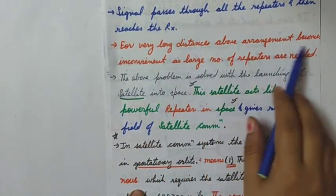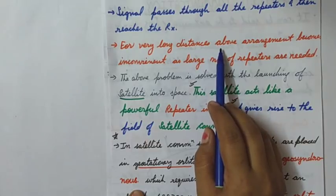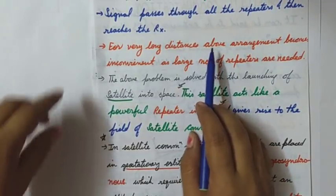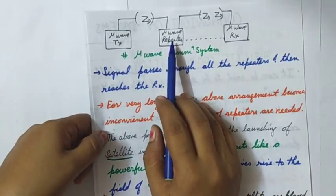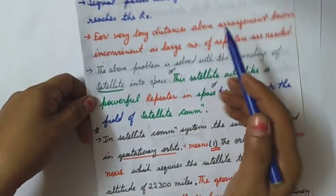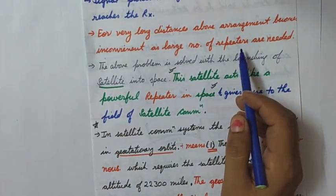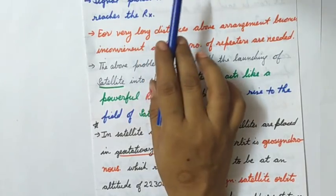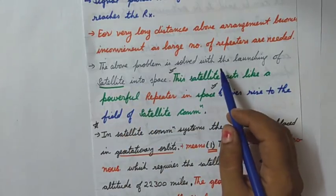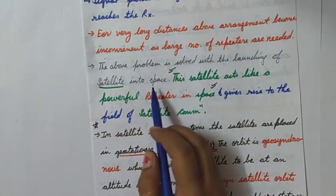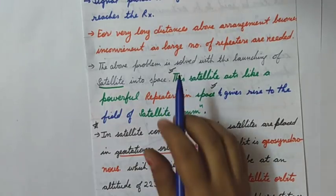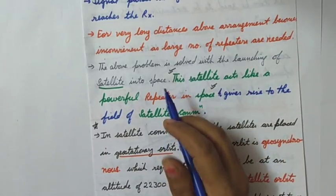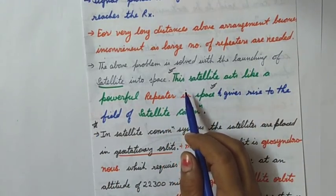For very long distances — from one continent to another, intercontinental communication — the above arrangement with many repeaters is not feasible. So to rescue this problem and provide a solution, the launching of the satellite opened a very new domain.